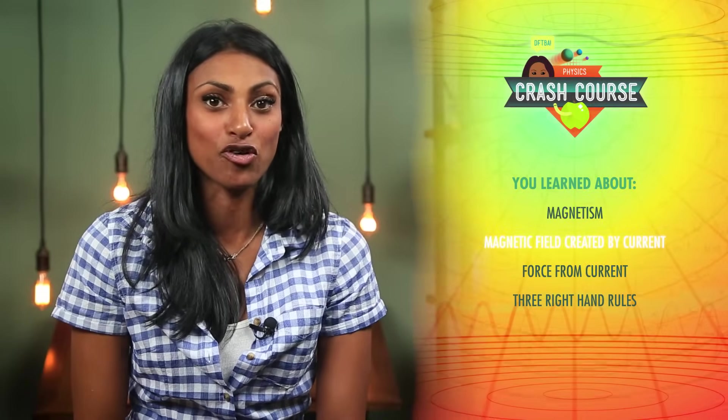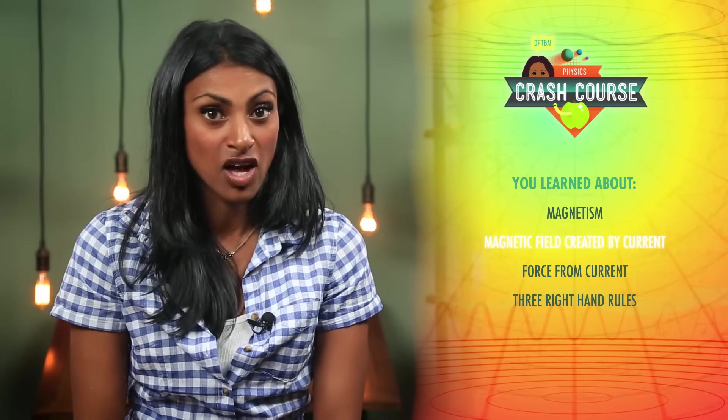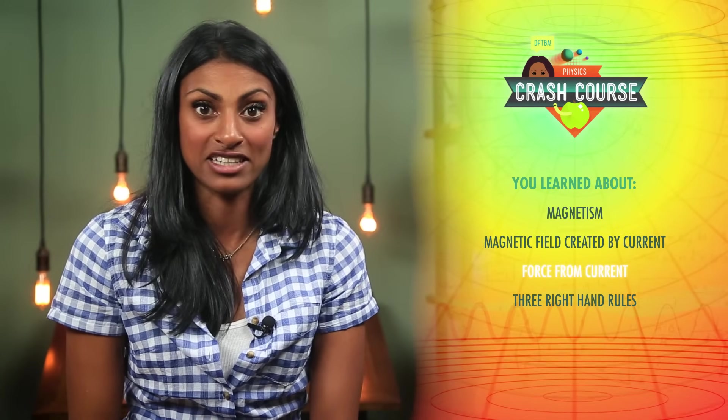Electric currents create magnetic fields, and magnetic fields exert forces on electric currents and charges. Ørsted's experiment was simple, but his discovery linked two major fields of physics and inspired other scientists to do a lot more experimenting. Today you learned about magnetism and the magnetic field created by a current running through a wire, the force from a magnetic field on a current in a wire and on a single charge moving through a magnetic field, and the three right-hand rules.